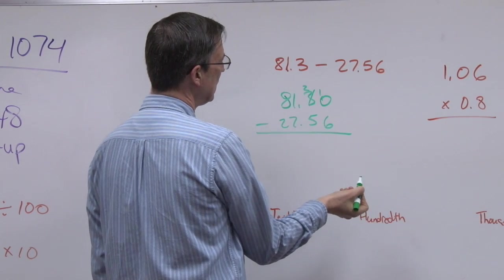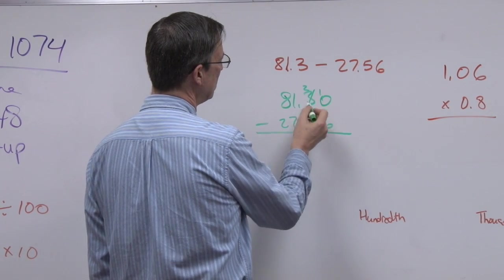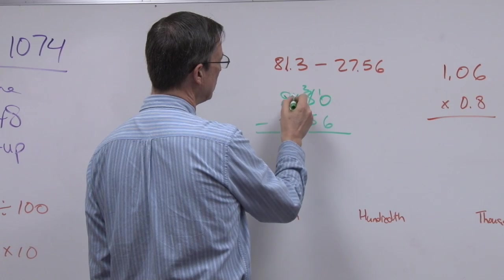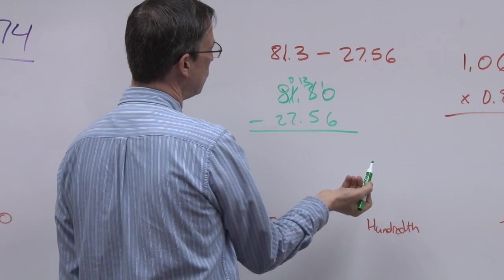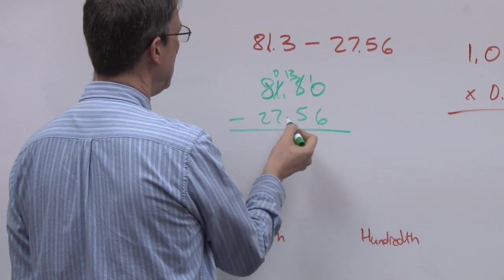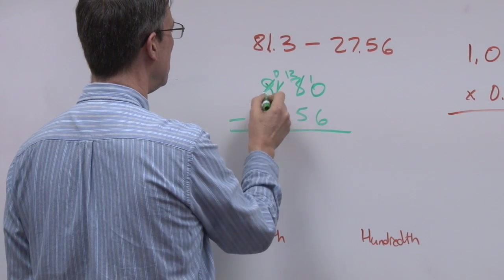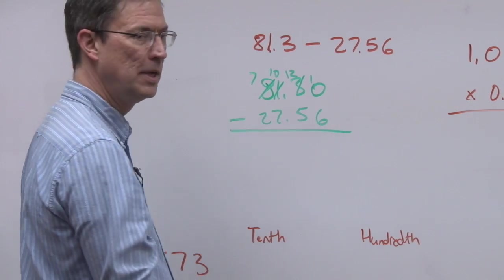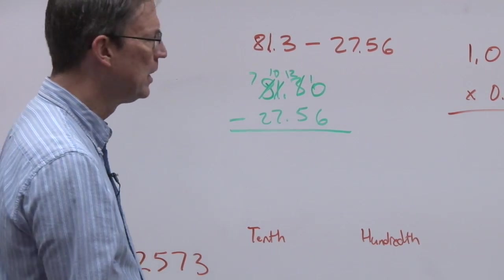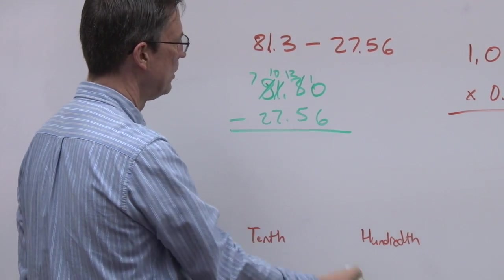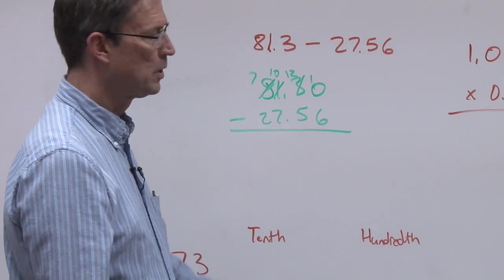But I have to borrow to make that a 2. I'm not going to be able to subtract 5 from 2, so I have to borrow to make that a 12. And then I can't borrow 7 from 0, so I have to borrow from that and make that a 10. So you know how to do borrowing. From that point, it's just a matter of subtracting, and the decimal will come straight down.